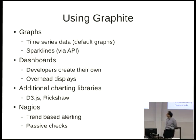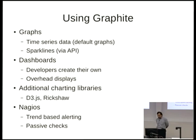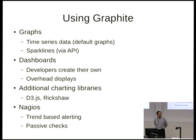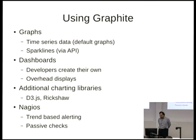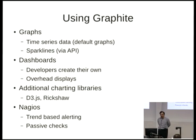We have Sparklines, developers write their own dashboards and overhead displays — crazy amounts of web traffic. People use whatever charting libraries they like; we don't have an official standard. We also push and calculate data from Nagios for a few things — in particular, for business metrics, experiments, and A/B testing. We have a bunch of passive checks that send data to both Graphite and Nagios.